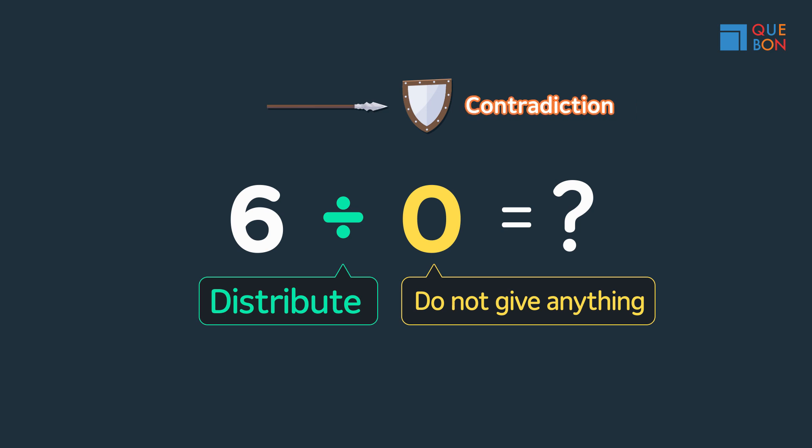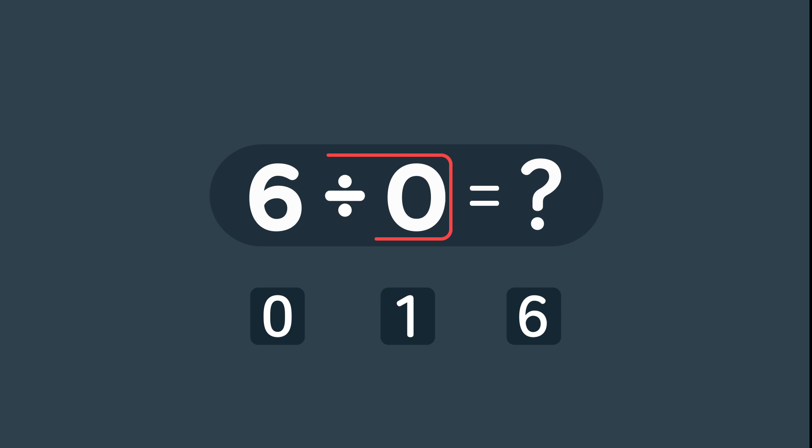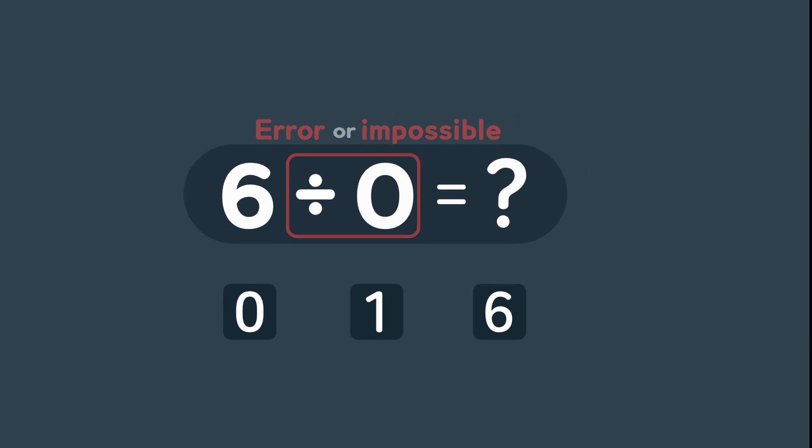We call this irony. Good vocabulary word. Look it up. We have to clearly remember the meaning of division and zero. Now, do you understand why dividing by zero results in an error and is impossible?